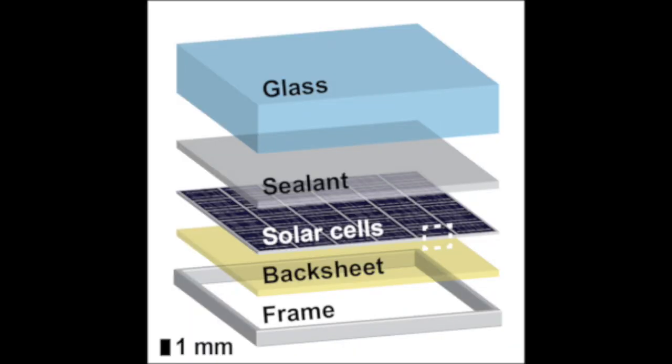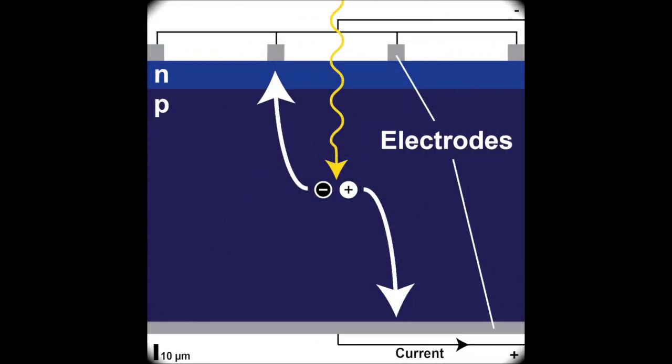Each panel is made of several different layers, but the solar cells in the middle are the most important piece of the puzzle. If we zoom in a bit more, we can see that each solar cell is made of light absorbing materials, sandwiched between two conductive electrodes.